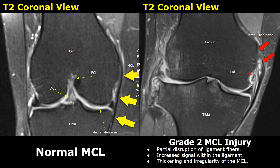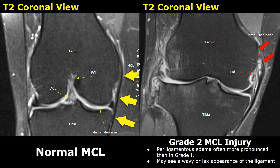In a grade 2 MCL injury, a partial tear is present in the ligament. These are T2-weighted images. In the normal image, the MCL is not surrounded by significant hyperintense fluid and the ligament has no tear or disruption. In this image, however, a partial disruption or tear is present in the ligament near its attachment with the femur. The fluid is more significant than in grade 1 MCL injury. The MCL appears irregular and thickened.